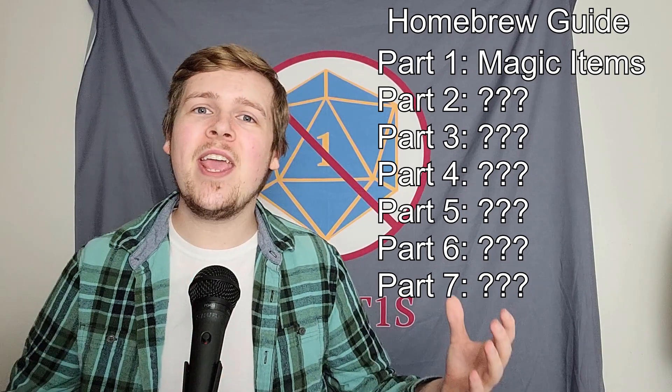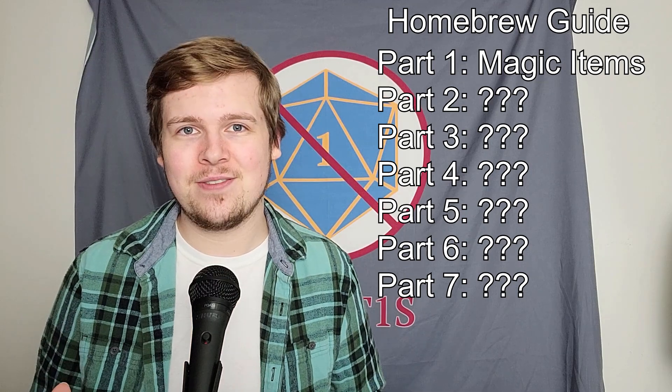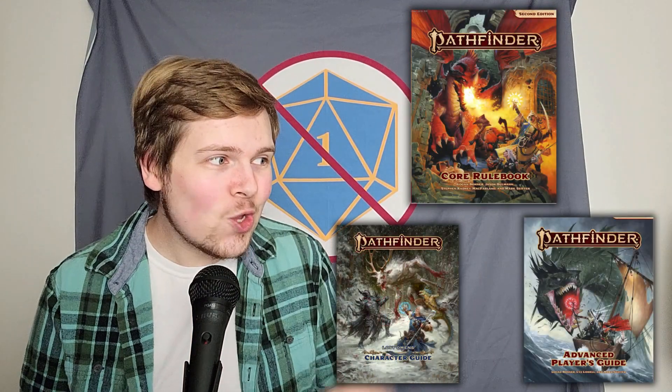Each subsequent video will be going over an even more complicated topic, starting with today's going over simply magic items. The sourcebooks we have access to have some really cool magic items, but they definitely don't have everything you might be looking for. Luckily, magic items are probably the easiest thing in the game to homebrew. So here today, I'm going to go over my 3 main strategies I use when designing unique magic items for my games. Additionally, I'm going to be crafting completely unique magic items that you can steal for free and use in your Pathfinder games if you so choose. There will be links in the description to PDF versions of all of the magic items I'll be creating for you here today — they are yours to use as you want.